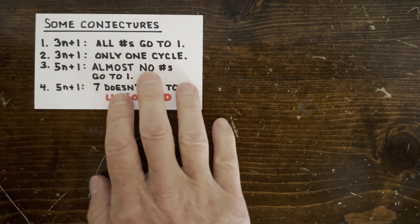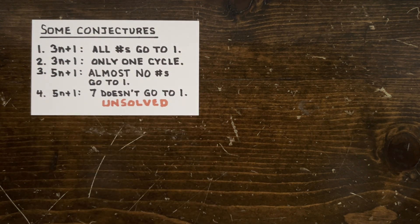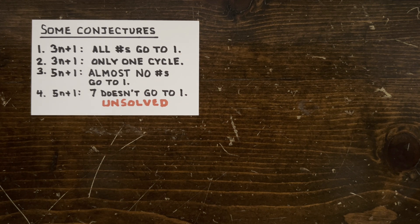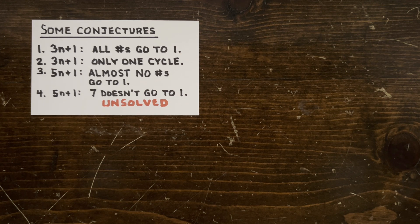Okay, how about what we've been talking about? Well, there are several well-known conjectures we've considered on this channel. One, the 3N plus 1 rule takes all start numbers to 1. Two, there's only one 3N plus 1 cycle. Three, under 5N plus 1, almost no start numbers reach 1.